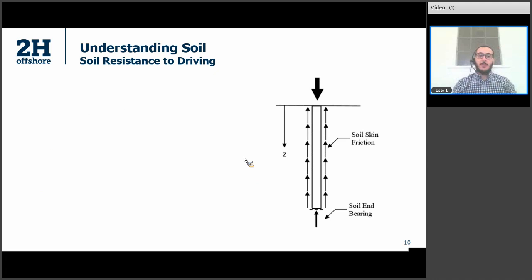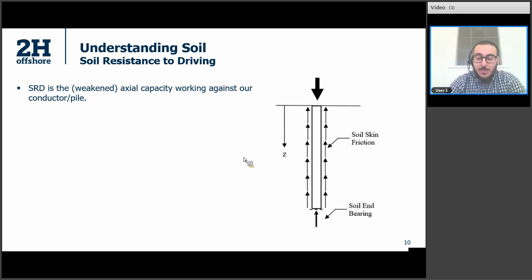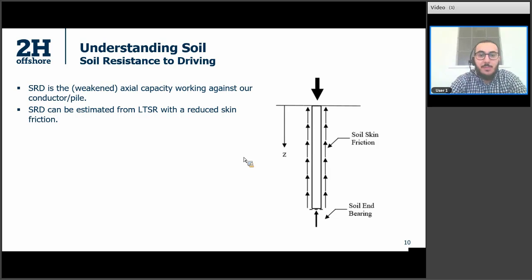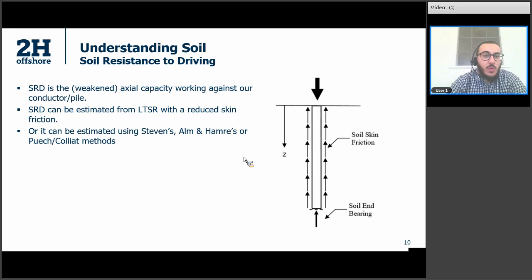Moving on to soil resistance to driving — which is really the axial capacity working against us. It is the weakened axial capacity working against our conductor or pile. Why weakened? It's because while driving, we weaken the soil. We can estimate the long-term static resistance and then estimate the soil resistance to driving if we can quantify the weakening effect observed offshore. Alternatively, we can estimate the soil resistance to driving using one of the established empirical methods, such as Stevens, Alm-Hamre, or Puech.